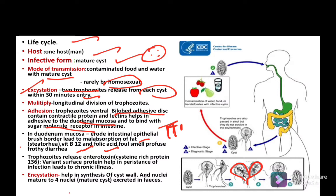Due to fat malabsorption, fat is stored as steatorrhea and produces a foul smell with profuse frothy diarrhea. Frothy means foam-like. The trophozoites also release enterotoxins which are cysteine-rich proteins, also called VSP-136 (variant surface protein), which helps in the persistence of the infection leading to chronic illness.